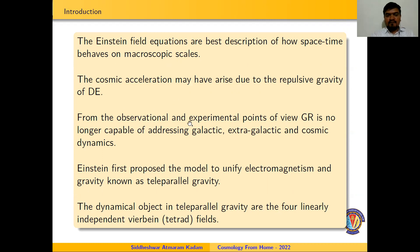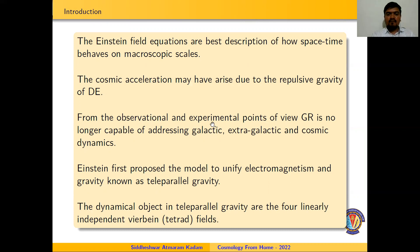Also, from the observational and experimental point of view, GR is no longer capable of addressing galactic, extragalactic, and cosmic dynamics. The initial modification in GR was proposed by Albert Einstein by replacing the general metric coefficient by tetrads.